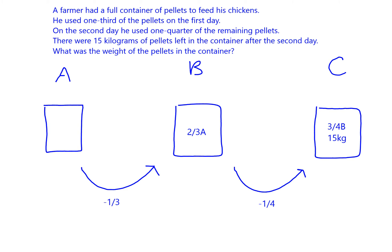We know that what we have in C, which is 15 kilograms, is the same as three quarters of what we had in B. Now 15 is three quarters of one number — dividing 15 by three will give us the value of one quarter, which is five kilograms, and then multiplying by four will give us four quarters, or the actual full amount. So we know that B is 20 kilos.